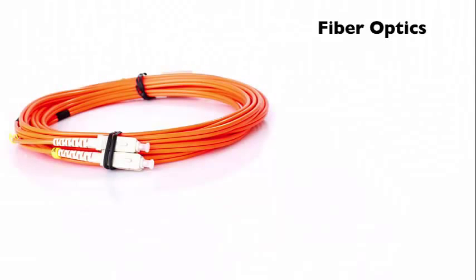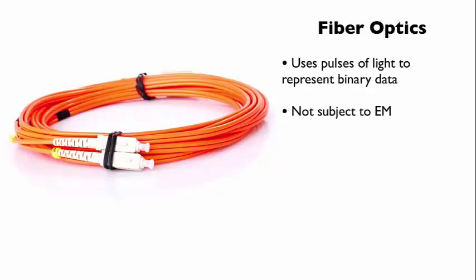Fiber optic cabling is going to represent data not as electrical pulses, but as pulses of light. The absence or the presence of light is going to indicate if we're sending a binary zero or a binary one. And since we're using light to send data instead of electricity, this completely gets rid of the issue of electromagnetic interference, or EMI. We're immune from that by using fiber optic cabling.